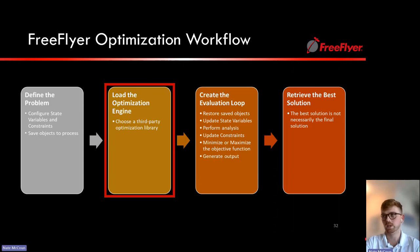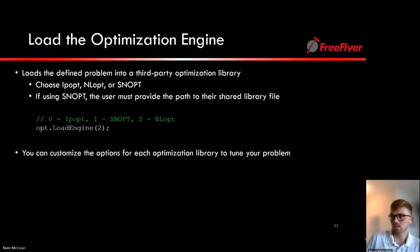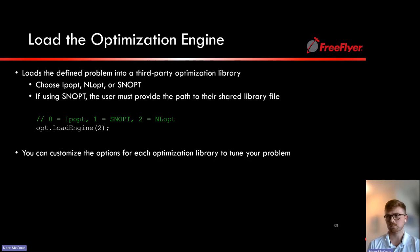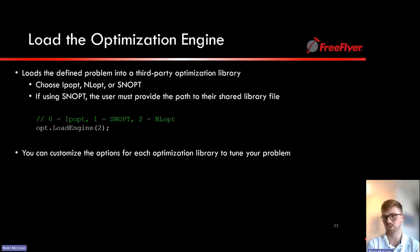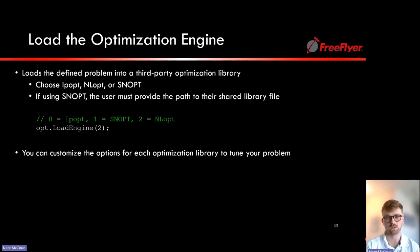Next, load the optimization engine using the loadEngine method call, which loads the defined problem into a third-party optimization library. FreeFlyer supports ipopt, nlopt, or snopt (snopt requires providing your own path to the shared library). Ipopt and snopt are good for all problem types, especially large sparse problems. NLopt is best for small to medium-sized problems but offers access to many algorithms, including global and non-derivative algorithms.